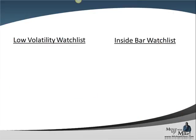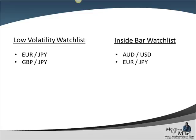Coming to today's watchlist: we're starting off with our low volatility watchlist, which is our one-hour time frame using Bollinger bands, watching the high and low of bands after we see consolidation — and we'll be watching the euro yen and the pound yen. Our inside bar watchlist is taking today's range, Tuesday, and comparing it with Monday, watching for a break from Berlin directing the trend, and there we have the Aussie dollar and the euro yen.